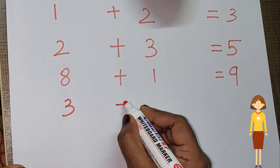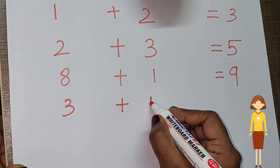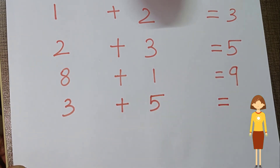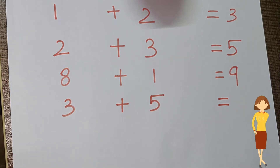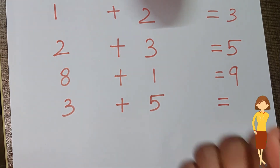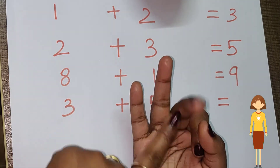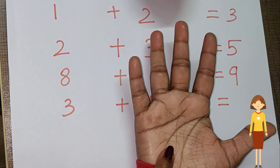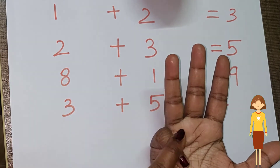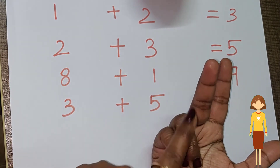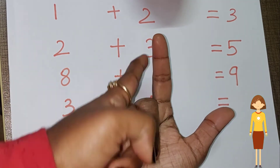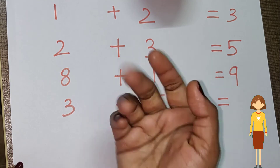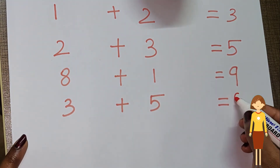Next: three plus five is equal to dash. Three in mind and five we are going to have in fingers — one, two, three, four, five. After three: four, five, six, seven, eight. So the answer is eight.